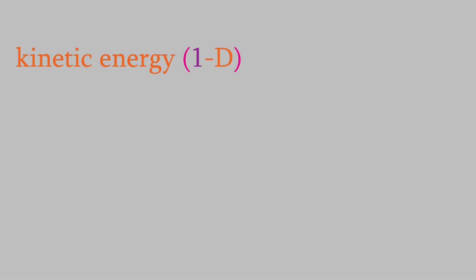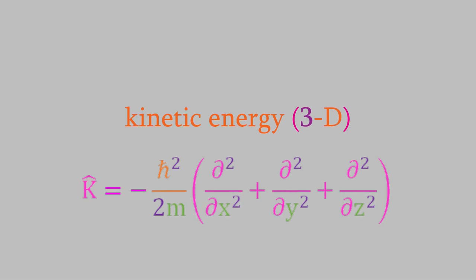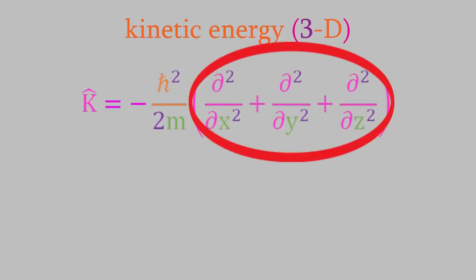The operator for the kinetic energy along the x-dimension is this. And here's the kinetic energy in three dimensions. Like the operators we saw for the momentum, the kinetic energy operator in three dimensions is very similar to the one for one dimension, but there are three terms, one for each of the dimensions. This last operator is worth a bit more discussion. The term in parentheses occurs in many different situations in physics and physical chemistry, so it actually gets its own symbol. The sum of the second derivatives for each of the three dimensions is symbolized this way. The triangle looks like an upside-down Greek letter delta, and it's often called del. So, we can rewrite the operator as negative h-bar squared over 2m times del squared.